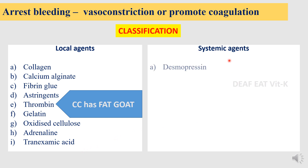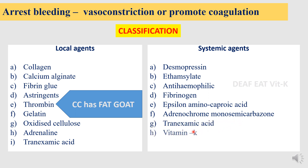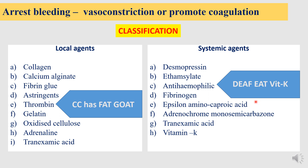Moving on to the systemic agents: desmopressin, ethamsylate, anti-hemophilic factor, fibrinogen, epsilon aminocaproic acid, adrenochrome monosemicarbazone, tranexamic acid, and the most common — vitamin K. Again finding it difficult? Go for this: Def eat vitamin K.